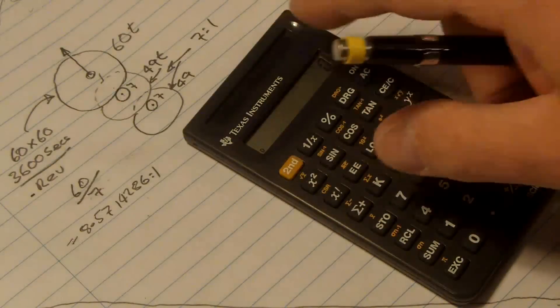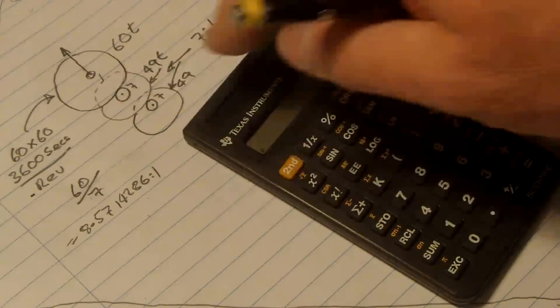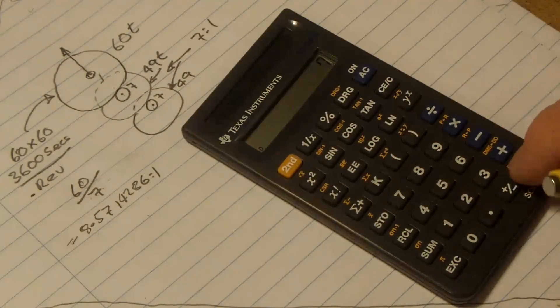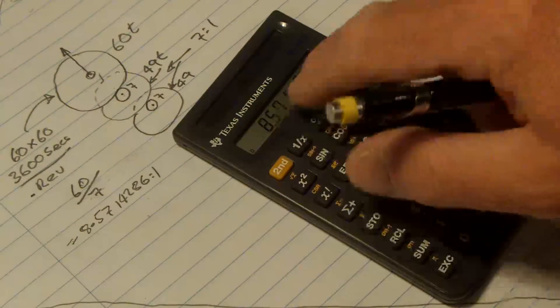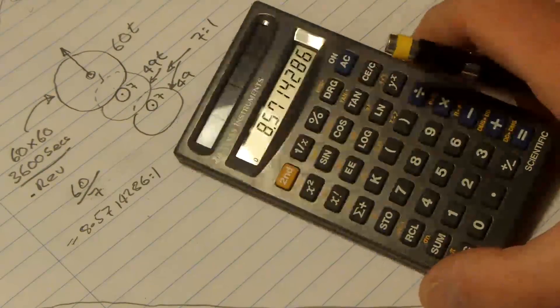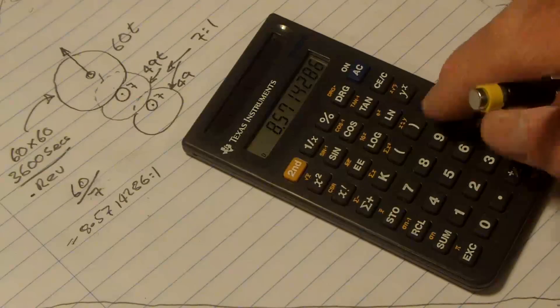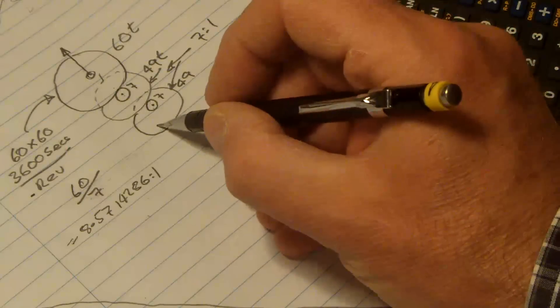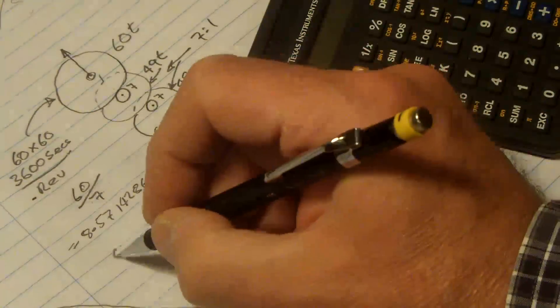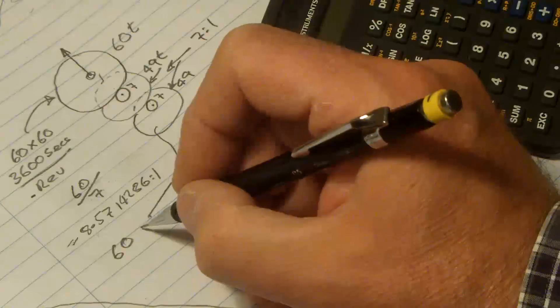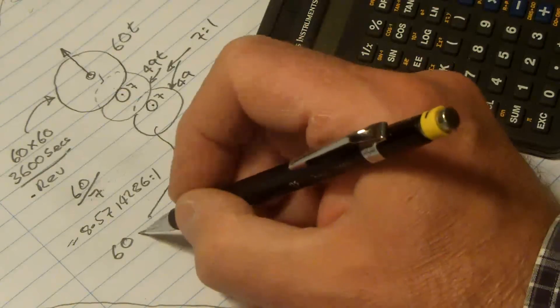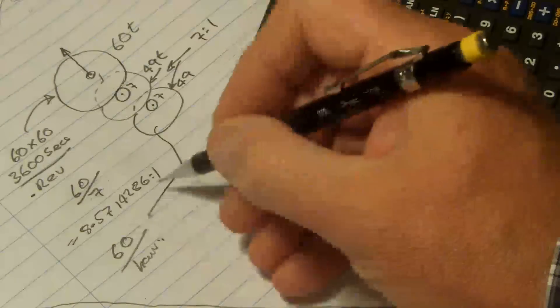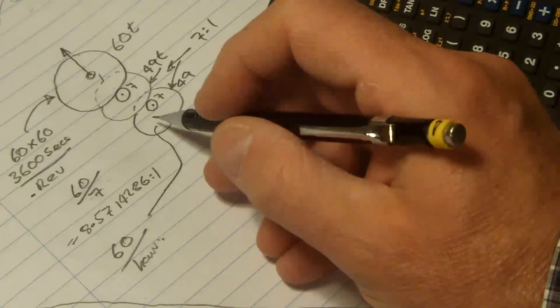So now we can say that first one we've got 60 divided by 7 gives us the 8 point, times that by 7, times that by 7. So 60, so this wheel will go around 60 times per hour. So in other words it's going to go around once a minute, so that'll be useful if we wanted to put a second hand on there.